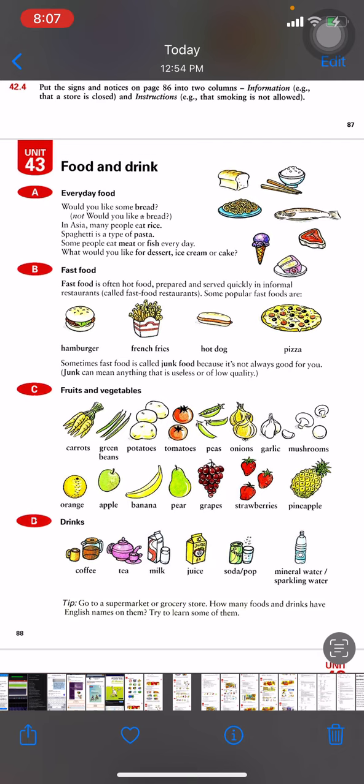Letter C: Fruits and vegetables. They're healthy. Carrot, green beans, potato, tomato, peas, onion, garlic, mushroom, orange, apple, banana, pear, grapes, strawberries, and pineapple.